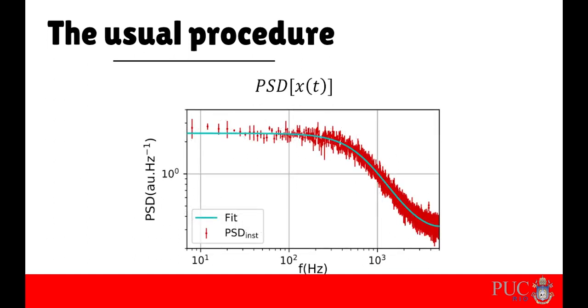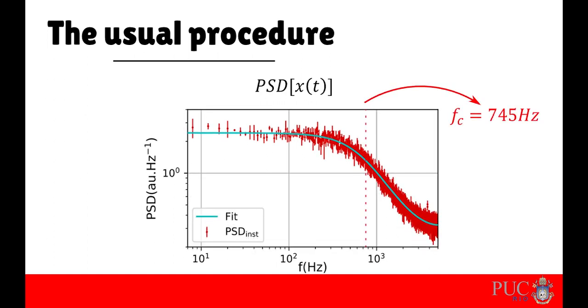We can then record the particle's position and calculate its power spectral density. Fitting it to a Lorentzian function gives a quantity called corner frequency, in this example equal to 745 Hz, which is proportional to the trap stiffness.